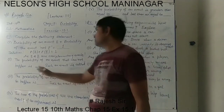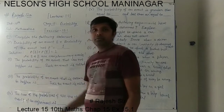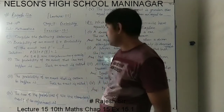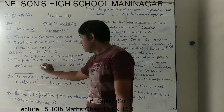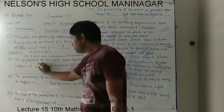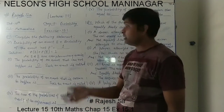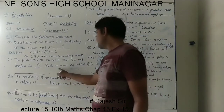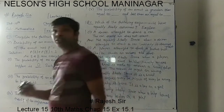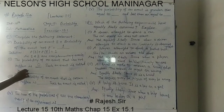Second number: the probability of an event that cannot happen. The probability of an event which is not happening is 0, and such an event is called an impossible event. The event which is not happening — that type of events are called impossible events, or certain events.